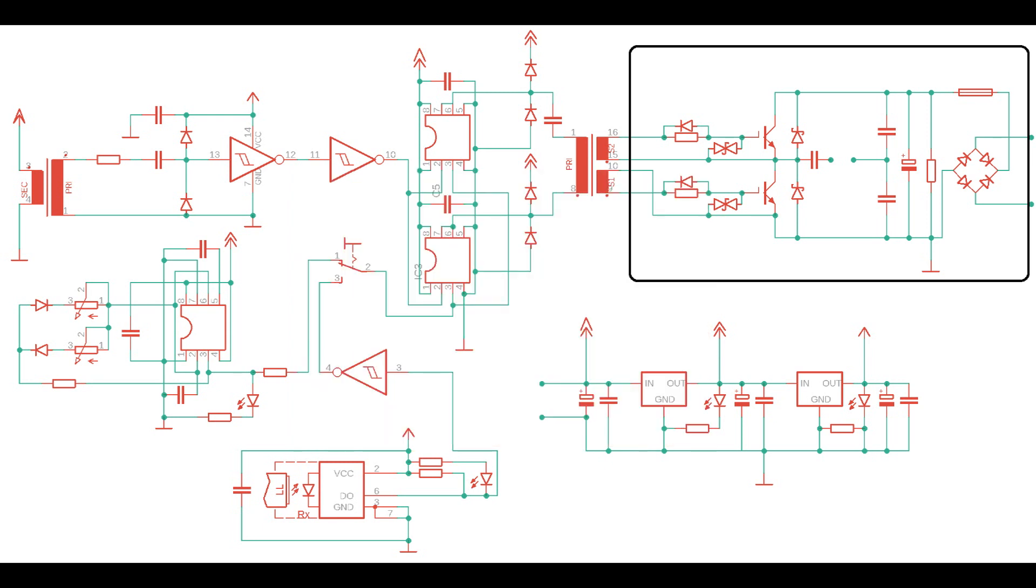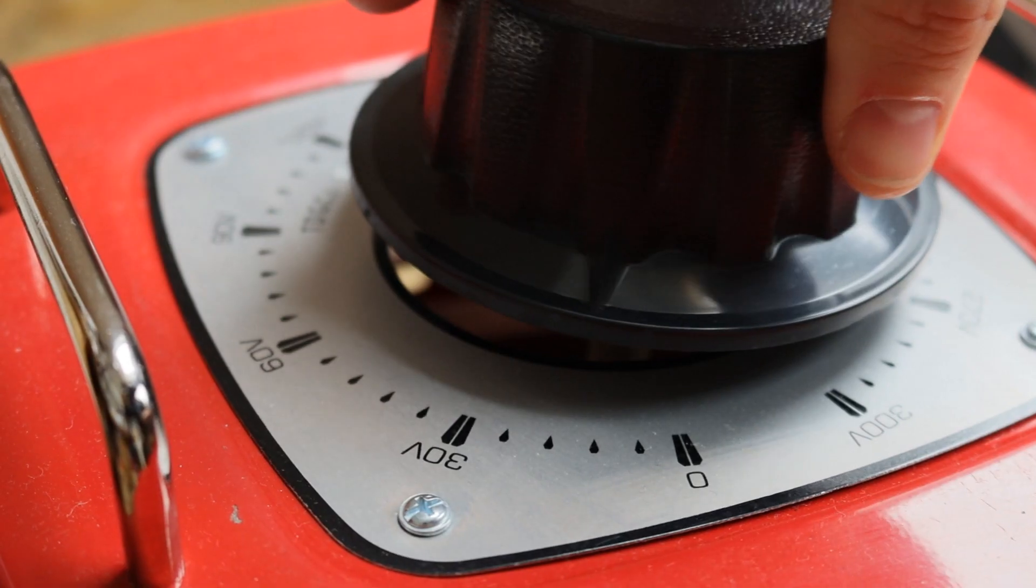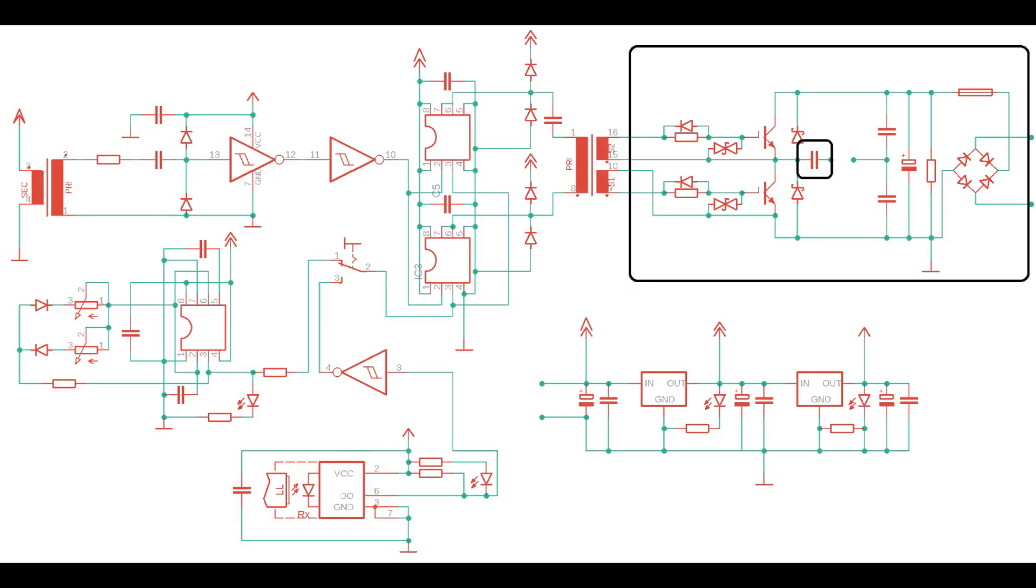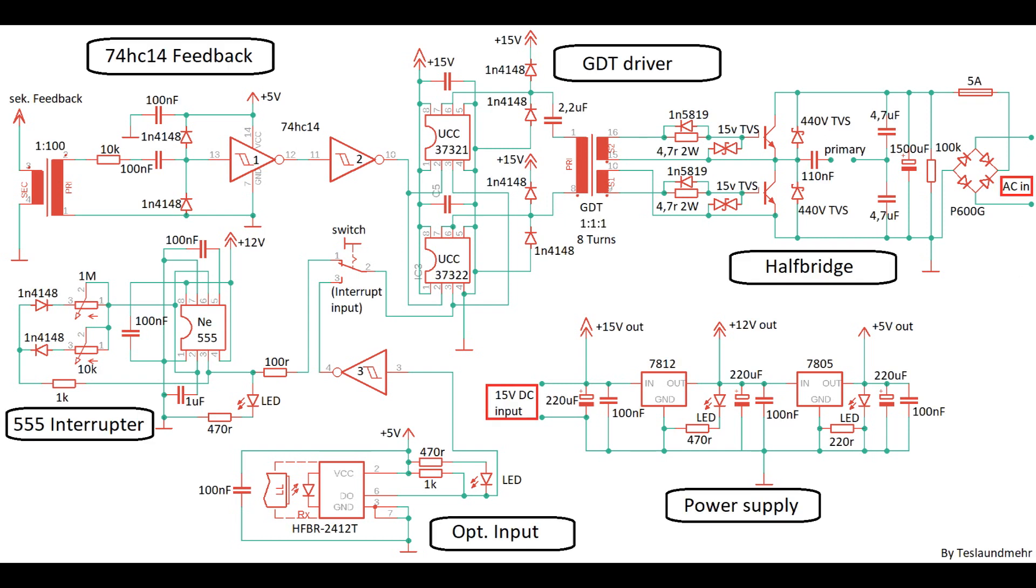It is best to connect a variac to the half bridge because then you can slowly turn up the voltage. The primary capacitor has to be adjusted of course. I will now add all component values so that you can build the circuit.